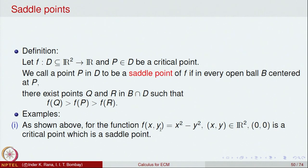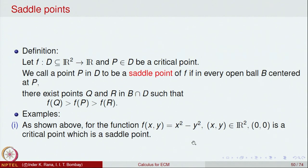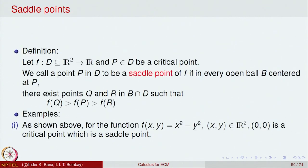For example, let us look at the function f(x,y) = x² − y², where x and y belong to R². The partial derivatives are 2x and 2y, and when put equal to 0 we get (0,0) as a critical point. Our claim is that this is a saddle point, because if I take a point close to the origin on the x-axis the value is positive, and if I take a point on the y-axis the value is −y², which is negative. So close to (0,0) we can have points where the value is positive and points where the value is negative, and the value at (0,0) is 0. So (0,0) is a saddle point by the above definition.